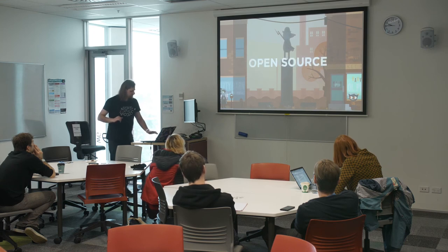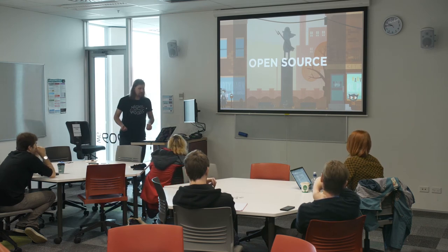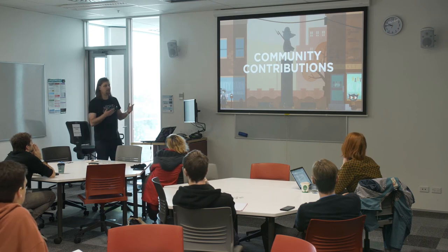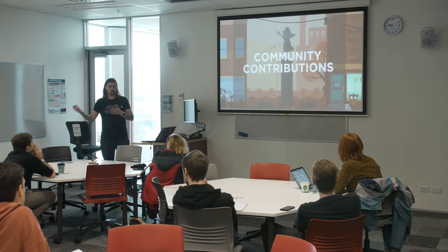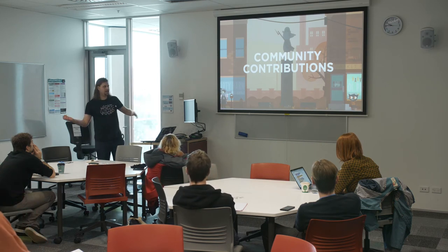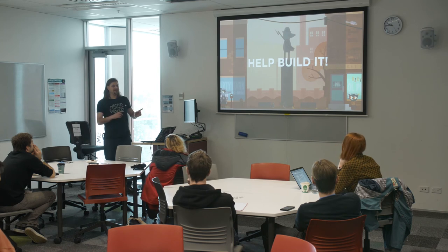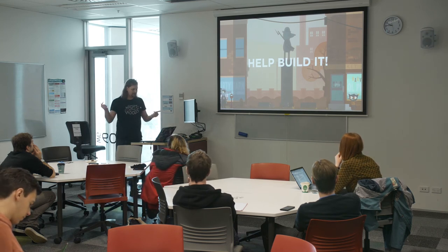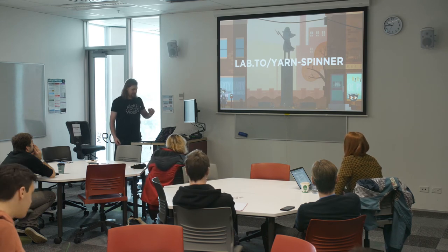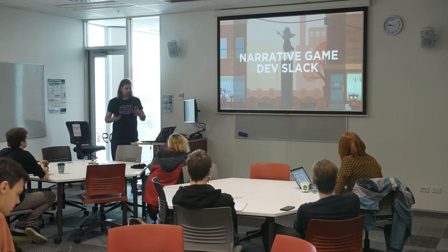Yarn Spinner is open source, released under the MIT license, so you can use it in both free and paid projects as long as you give attribution. It's the result of community contributions — a number of cool features that shipped in Night in the Woods came from contributors to the Yarn Spinner source code. The whole thing is hosted on GitHub at secretlab.com.au/yarn-spinner, and there's also a game narrative dev Slack community.